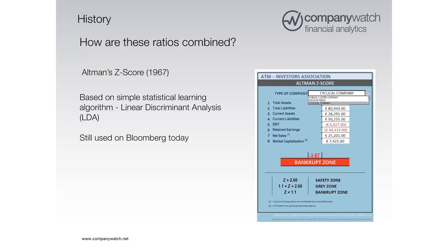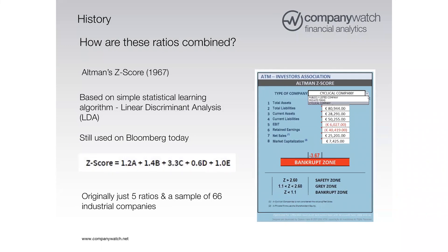In 1967, Ed Altman came up with what's known as the Z-score, using a statistical learning technique called linear discriminant analysis to combine financial ratios. This is when people really started looking at pattern recognition — identifying features of companies that had previously failed versus those that hadn't. He had a very simple, interpretable formula based on five financial ratios, originally from a sample of around 66 industrial companies. People still use the Z-score as a yardstick measure; it's available on Bloomberg today.